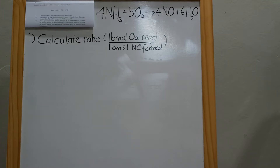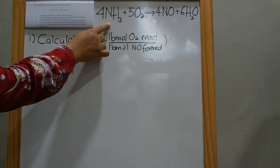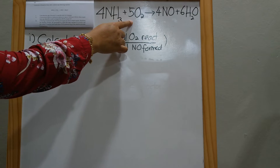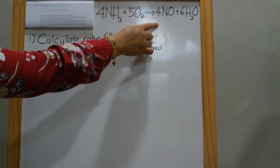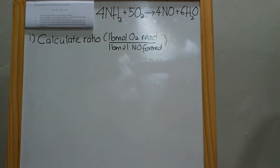Hello students, today we will do the first tutorial for reactive processes. The question we'll do in this video is question number two in your tutorial file, which has been uploaded to your e-learning. The question states: ammonia is burned with oxygen producing nitric oxide and H2O.